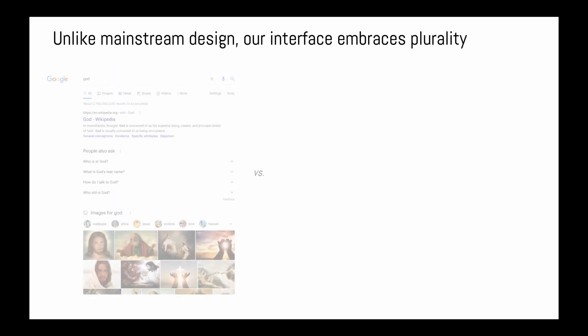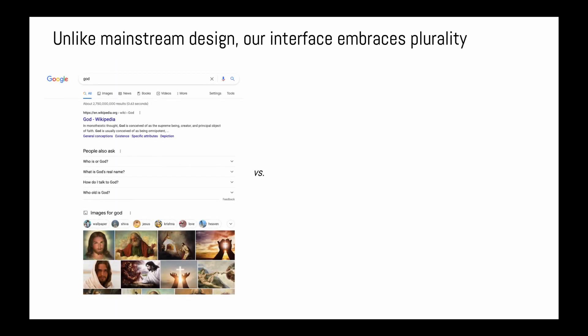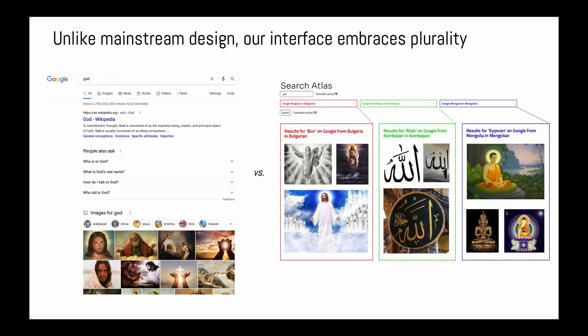Mainstream search interfaces like Google's make the design assumption of a single language and a single location per user. Our interface questions this assumption by encoding values of cultural and linguistic multiplicity. Every time you're searching, you have to think about the places you're searching from, as well as those that you're not. For example, Google only shows a monotheistic Christian God to US English users, whereas our interface shows the Christian God, Arabic renditions of Allah, and various Buddhists depending on the location.